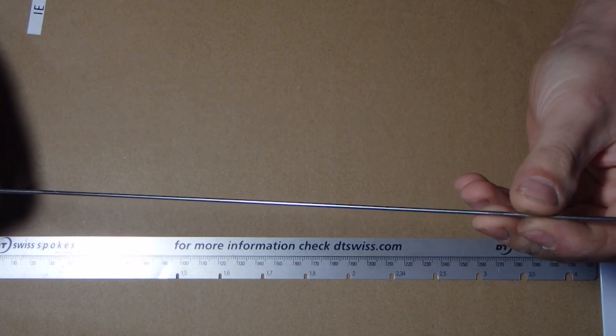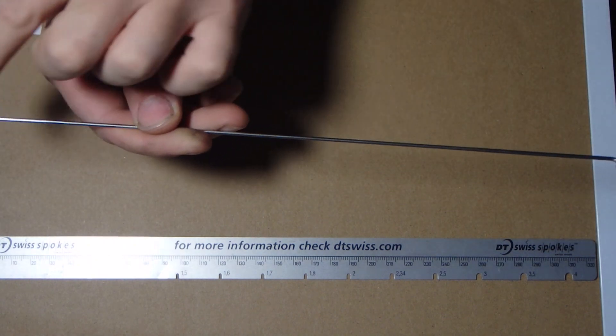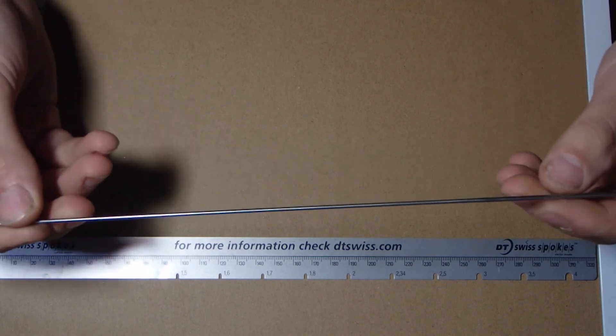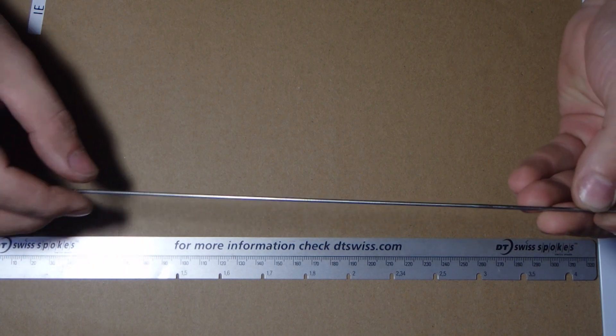With J-Bend spokes there's a few things you're going to want to know if you break one or want to use one, and that's going to be the length and how thick the spoke is along its length. That changes the characteristics of the spoke, and obviously the length is going to affect if it's going to work in your wheel or not.